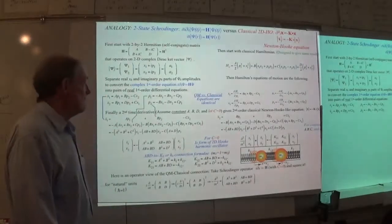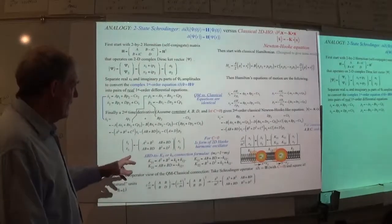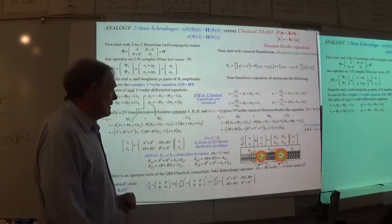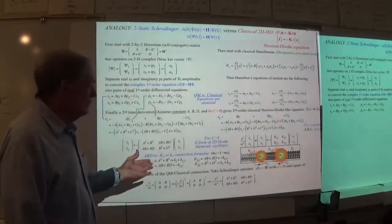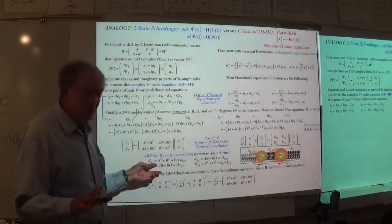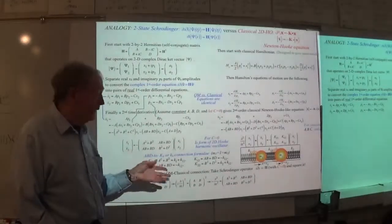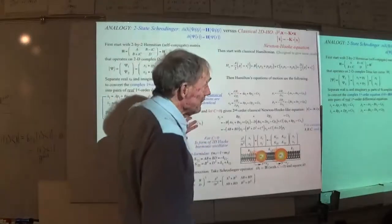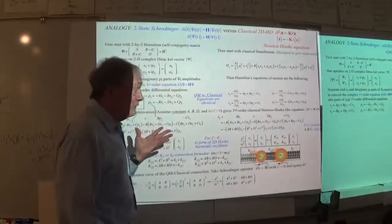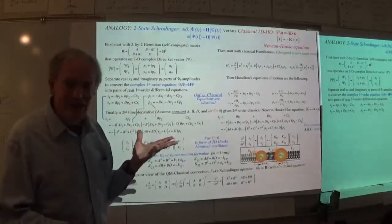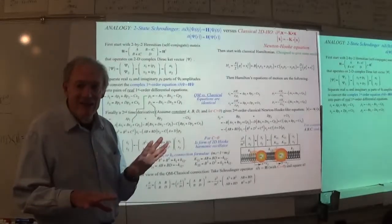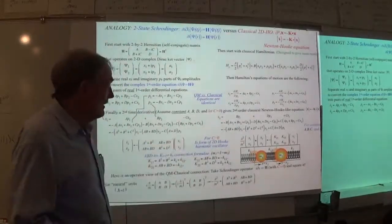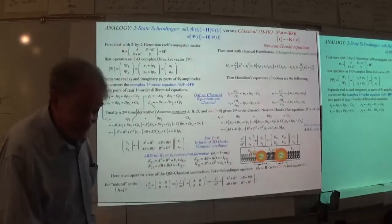The idea then is that we have a connection formula. We have this programmed in one of our apps so you can put in K1, K2, and these guys here and get A, B, and D. It's a bit squirrely, but the connection is still there.